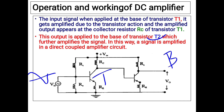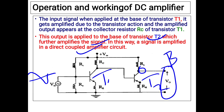This output is then applied to the base terminal of the second transistor T2, which further amplifies the signal. The output of the first transistor T1 is applied directly to the input of transistor T2, and again the signal is amplified by beta times. The final output appears at the collector terminal of the second stage transistor T2, where we connect our output device. This is the working and operation of the direct coupled amplifier circuit.